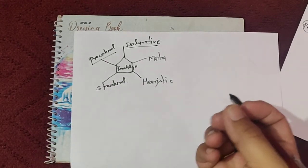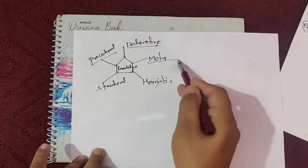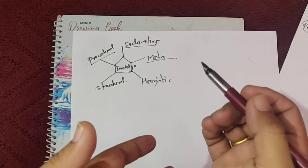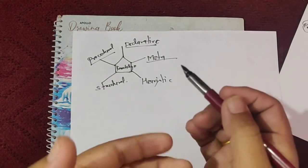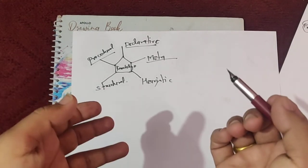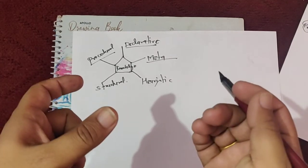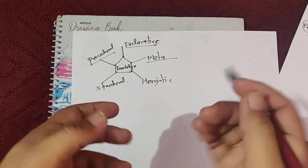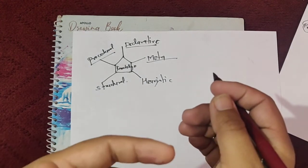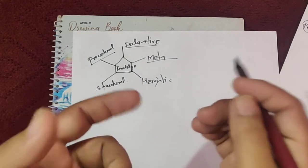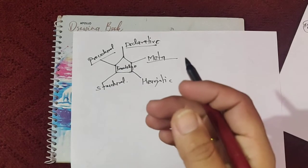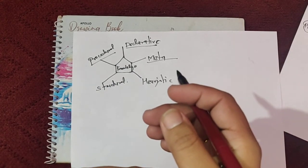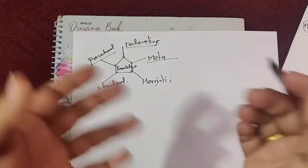Meta knowledge is knowledge about knowledge — it is the understanding of a given domain, where various knowledge can be drawn from a single statement. For example, knowledge about blood pressure is more vital for diagnosing a medical condition than skin color, because blood pressure provides more information about many diseases.